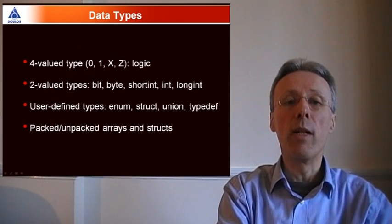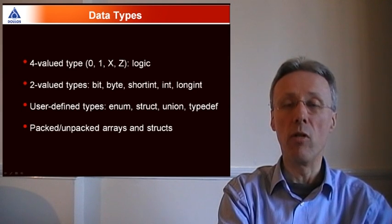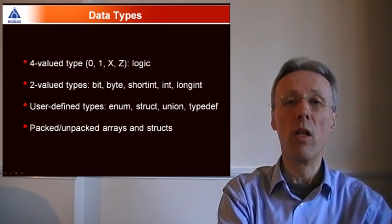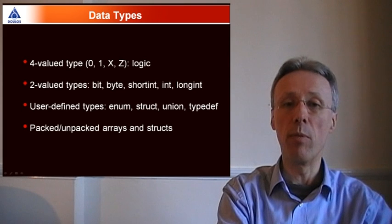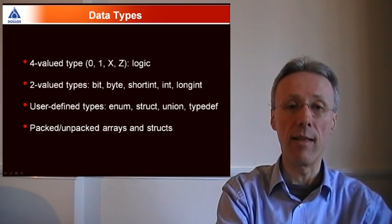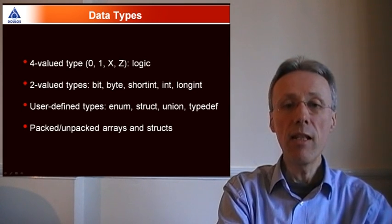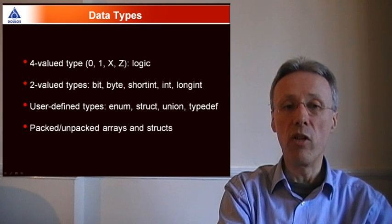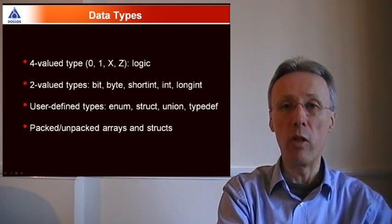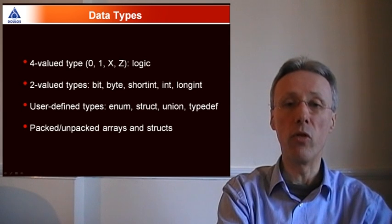Verilog has always had a four-valued data type, which is known as logic in SystemVerilog, where each individual bit is represented by four values: 0, 1, X, and Z. SystemVerilog adds a range of so-called two-valued data types where each individual bit can just take two values, 0 or 1.